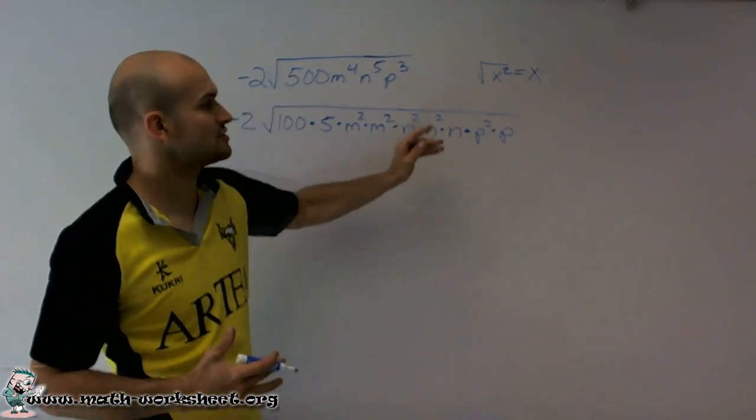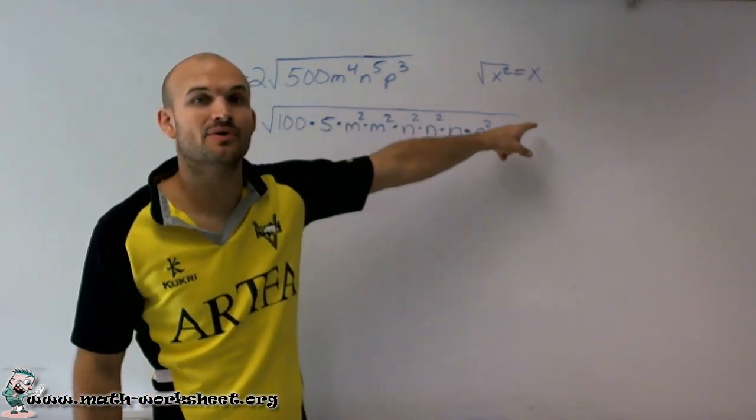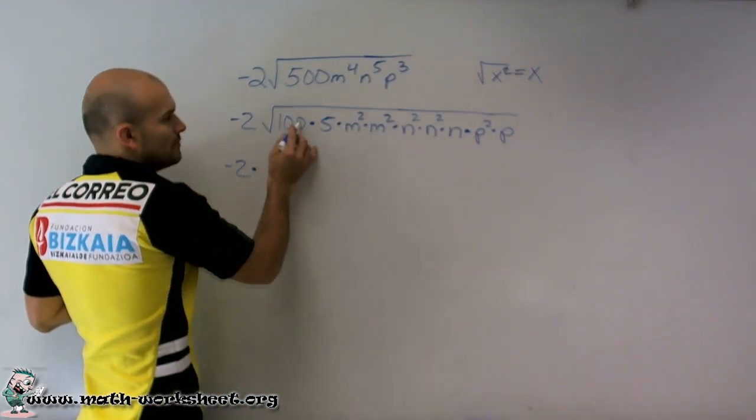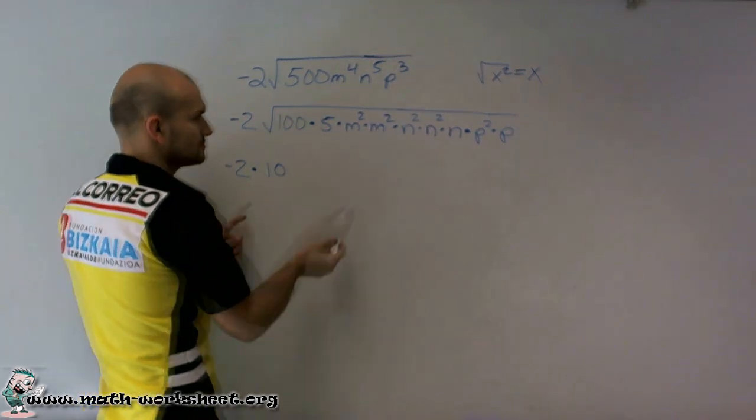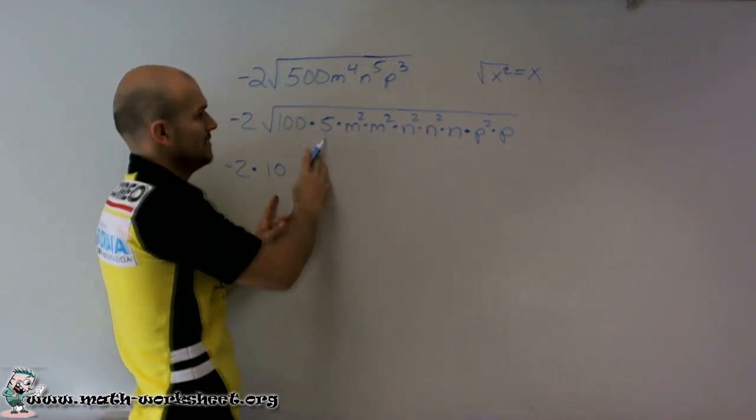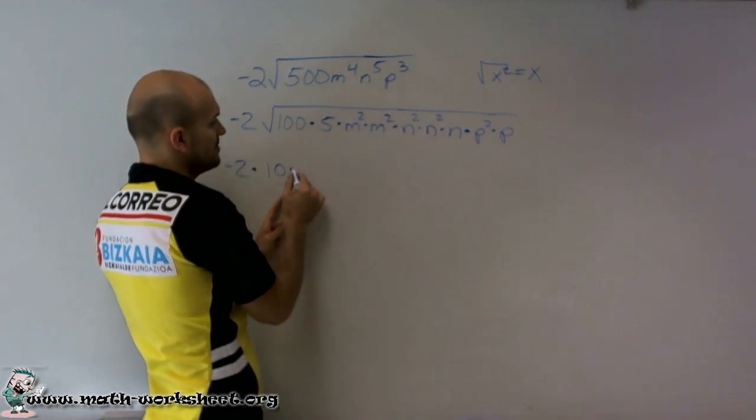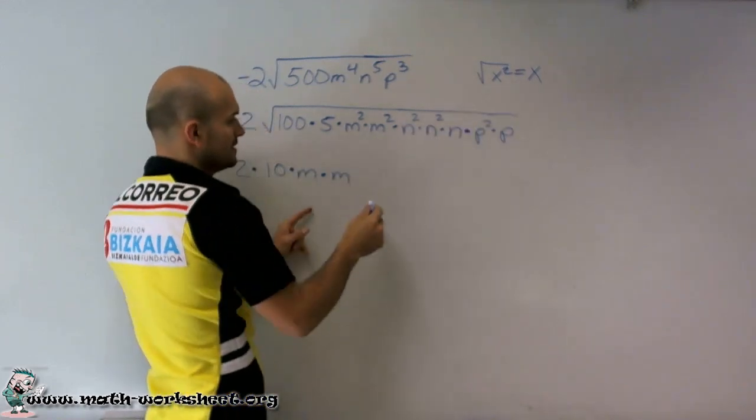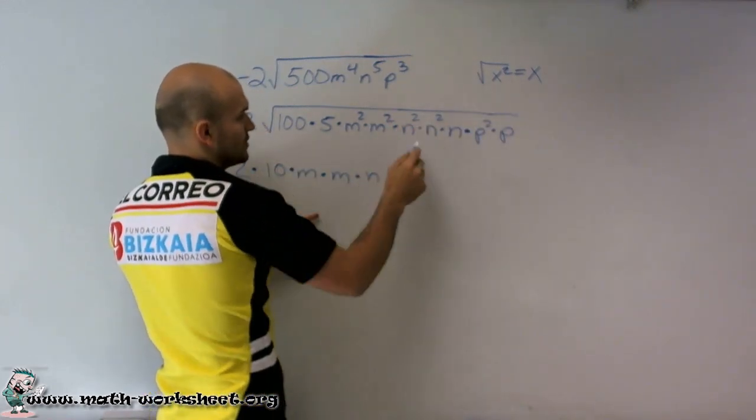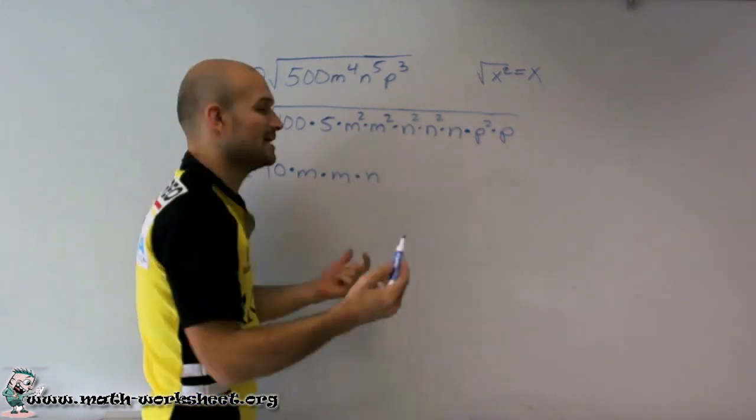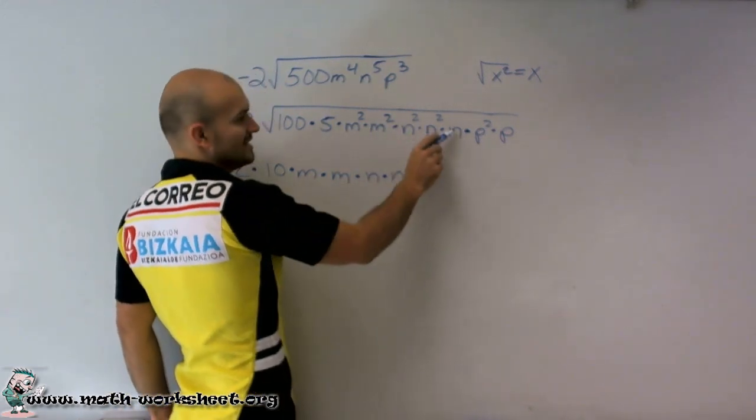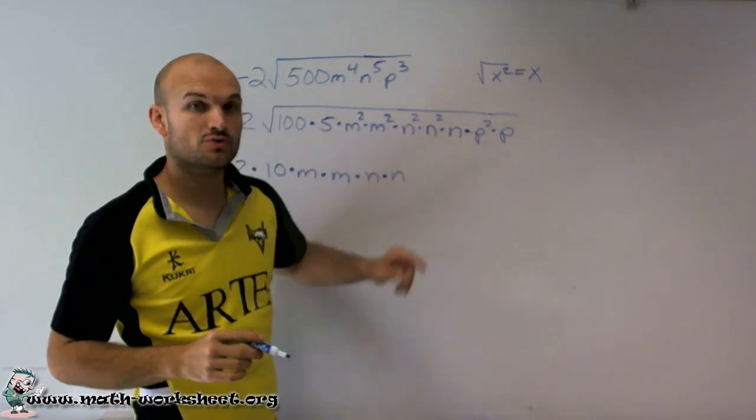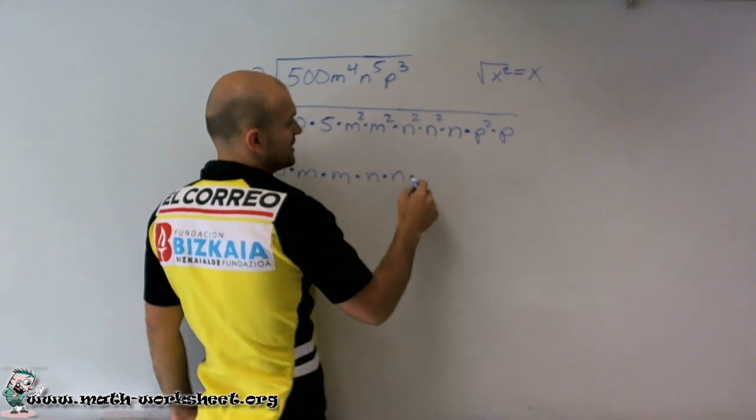Well, now what I can do is I can take the square root of each one of these numbers and simplify it. So here I have negative 2 times the square root of 100 is just 10. I can't take the square root of 5, so that's going to remain under the radical. The square root of m squared is m. The square root of m squared is m. The square root of n squared is n. This n is going to have to remain under the radical because you can't take the square root of n. The square root of p squared is just going to be p as well.